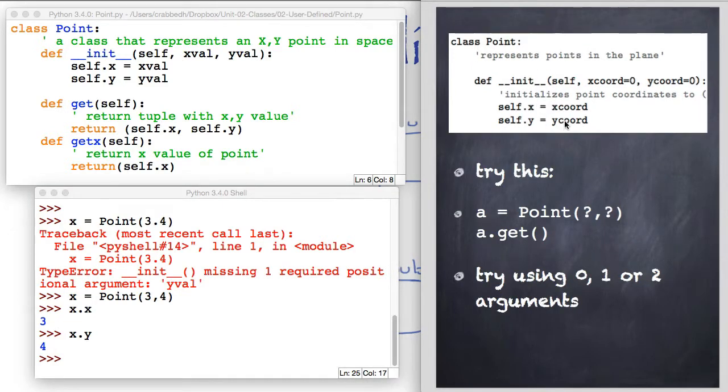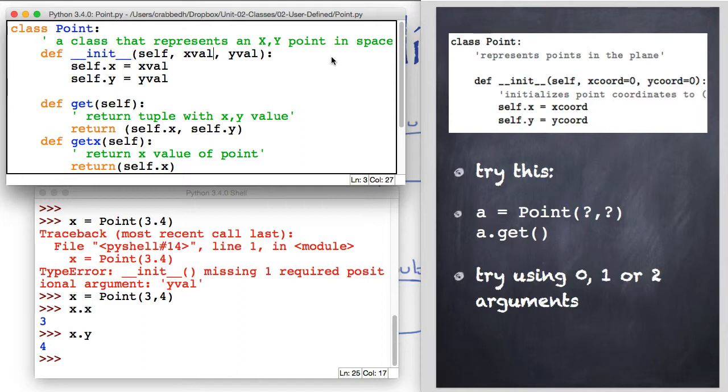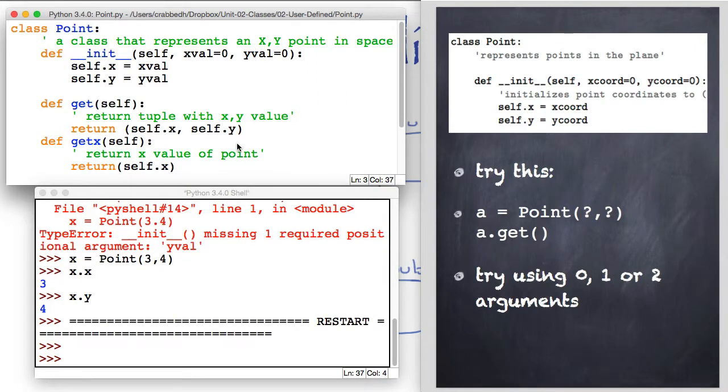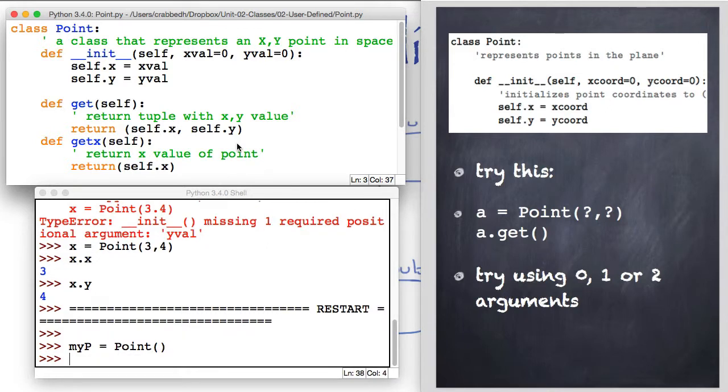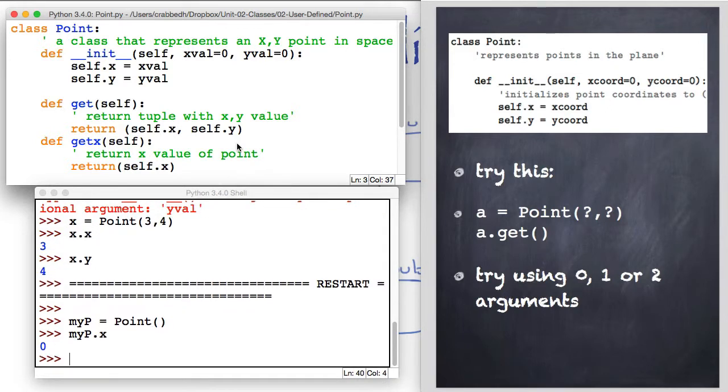It's possible to initialize values by giving them a default value. We can say equals zero. If I do not put an X value it will assign it a zero value, and a Y value will be zero as well. These are our defaults. We need to re-execute that. I'll go my P for my point equals point. Now if I don't put anything in, I don't get an error. My P dot X and Y are both zero.